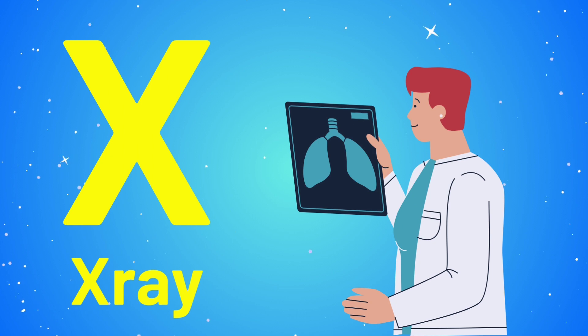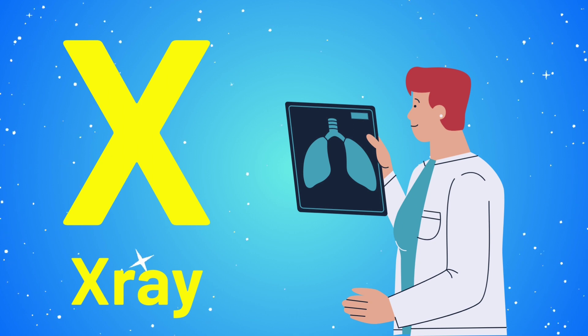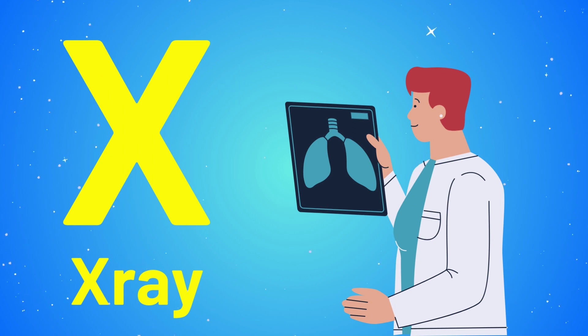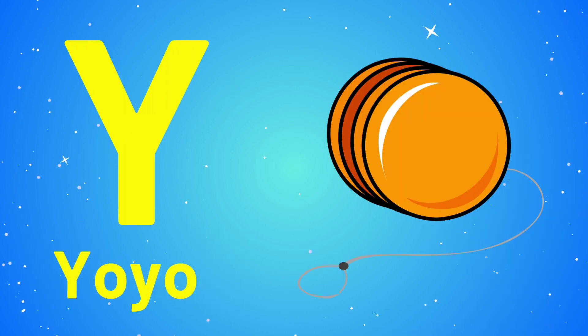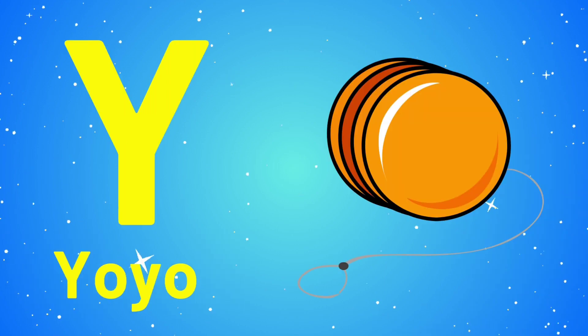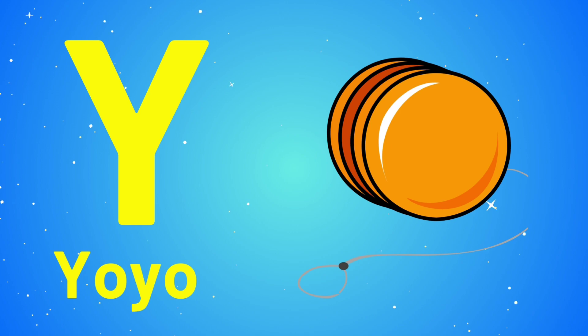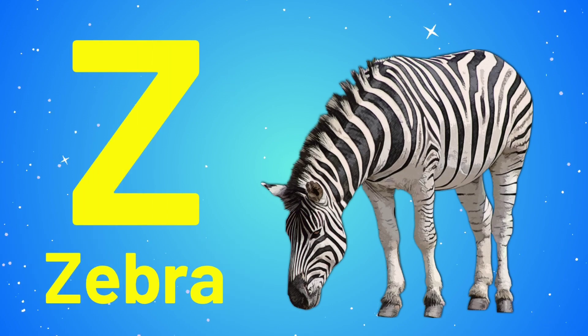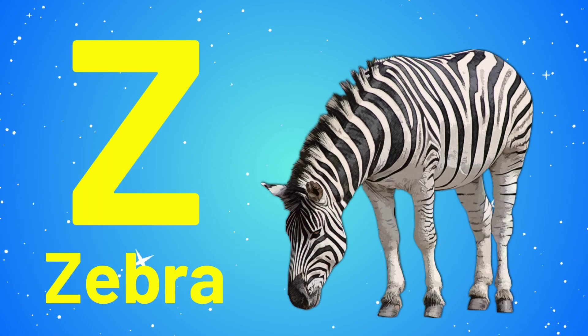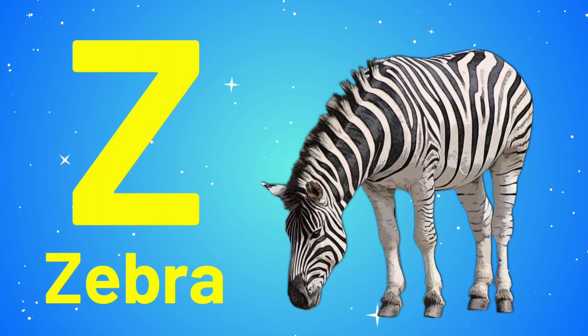W is for Watch. X is for X-Ray. Y is for Yoyou. Z is for Zebra.